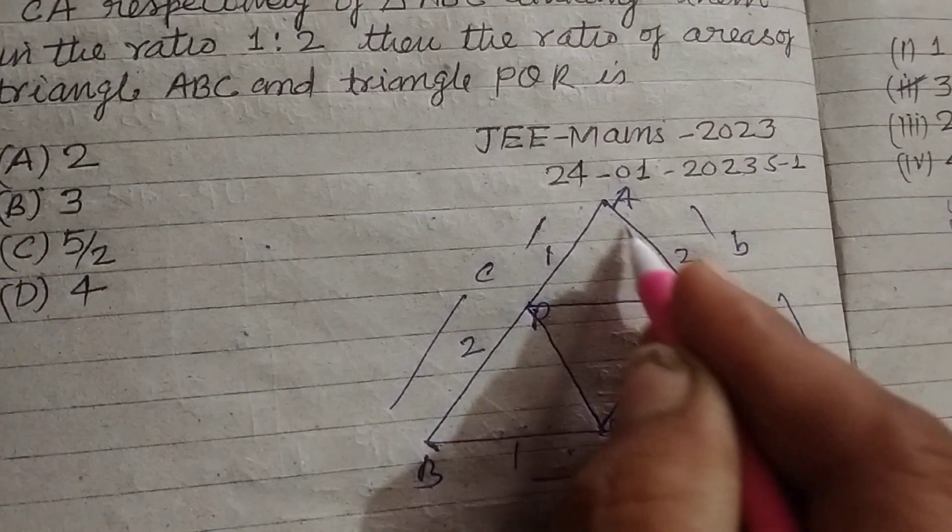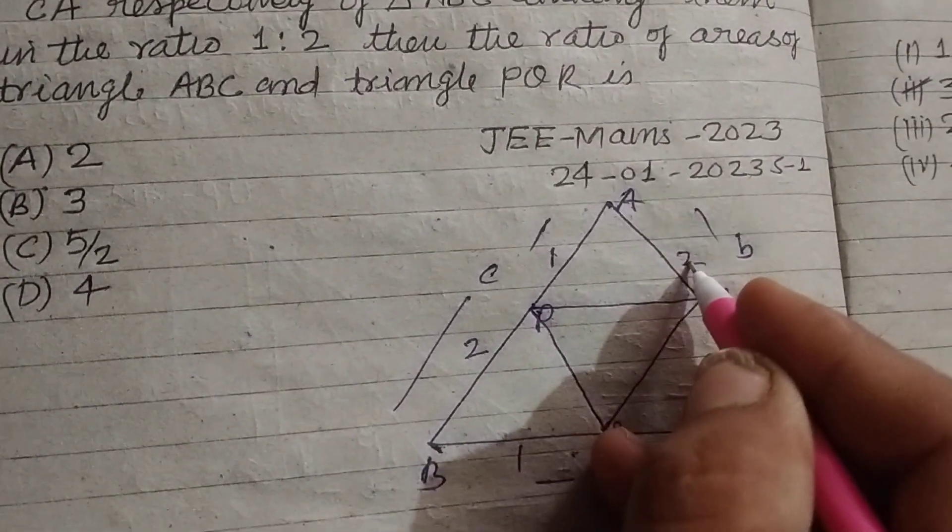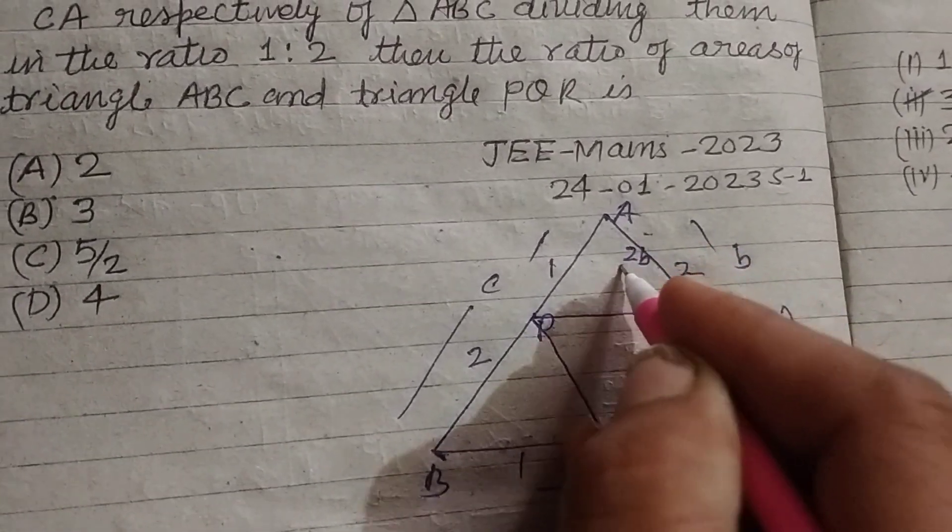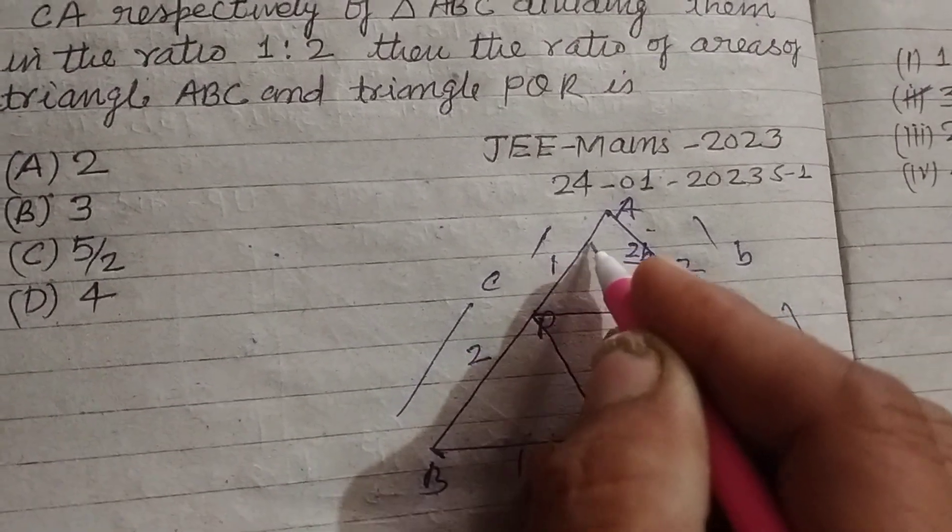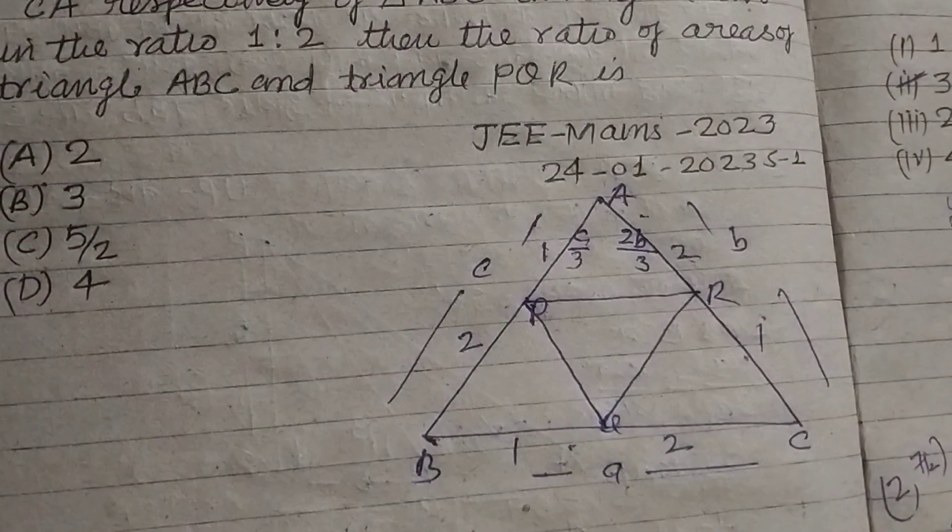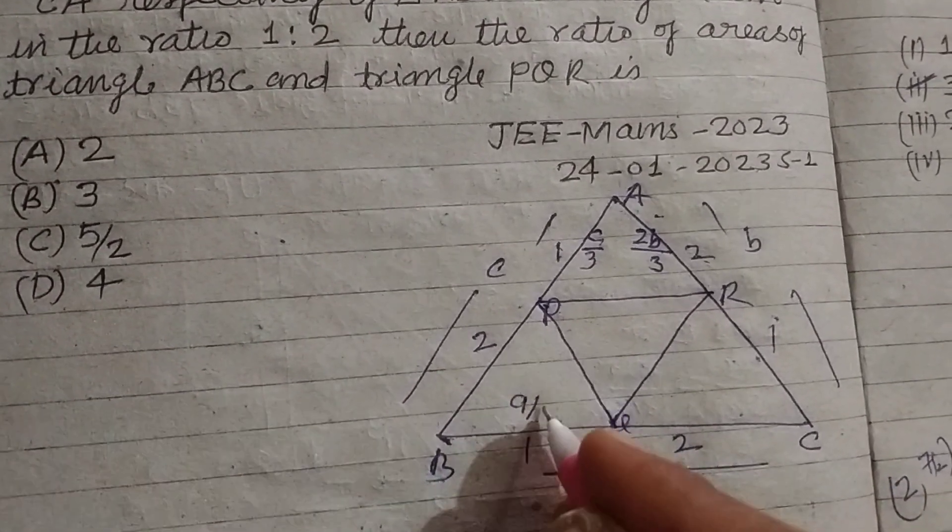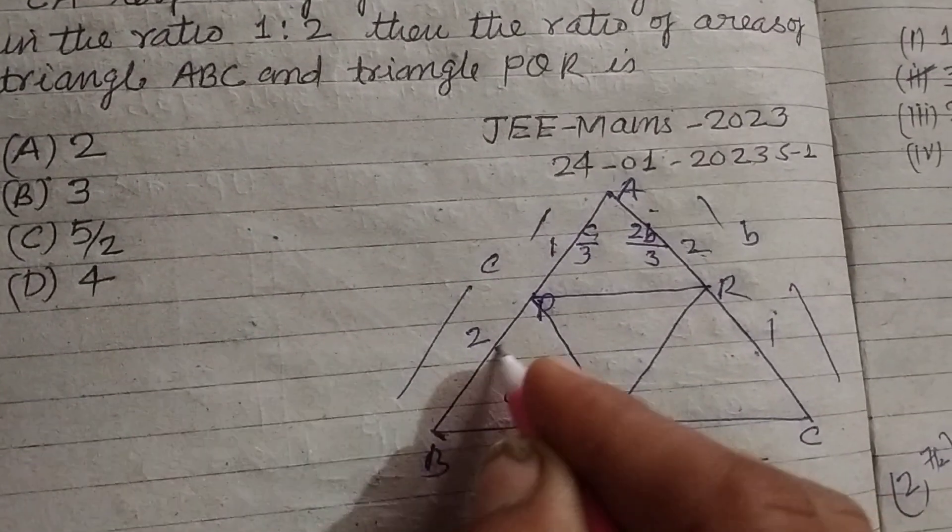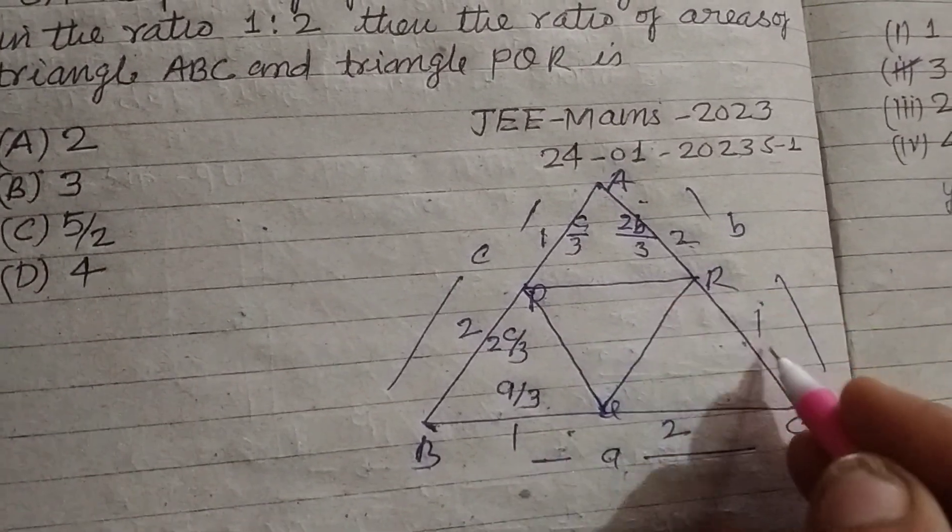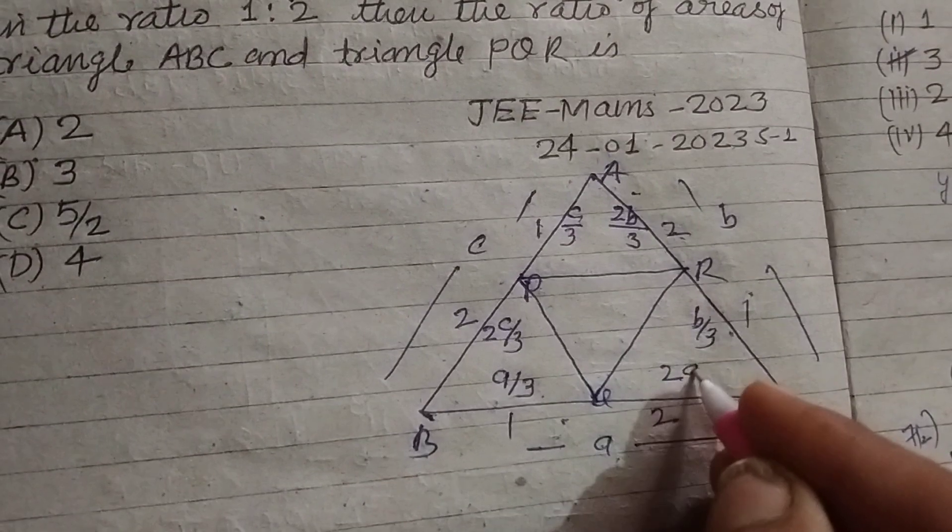If we find the lengths of the sides by the ratio: this is 2B over 3, this is C over 3, this is A over 3, this is 2C over 3, this is B over 3, and this is 2A over 3.